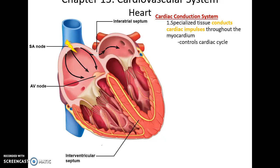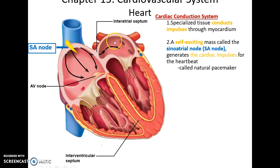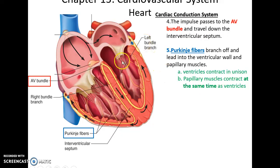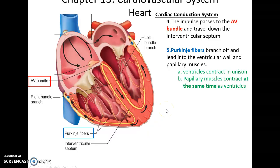The cardiac conduction system: cardiac tissue carries electric current, which controls when contractions of the heart muscle occur. It all starts in the sinoatrial node found in the right atrium — a self-exciting mass that generates the cardiac impulse, the heart's natural pacemaker. The electrical impulse spreads to both atria, causing them to contract, and arrives at the atrioventricular node, where there is a slight pause so the atria contract before the ventricles. The impulse then travels through the interventricular septum down the atrioventricular bundles to the apex, where it enters the Purkinje fibers, which spread the current to the ventricular muscle tissue, causing the ventricles to contract upward, pushing blood out. The papillary muscles also contract to keep the atrioventricular valves closed.